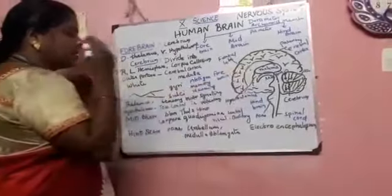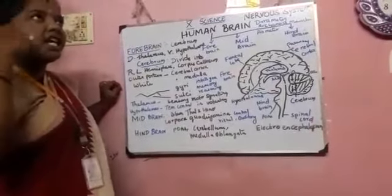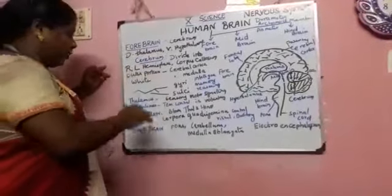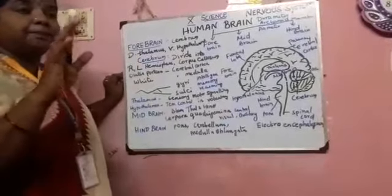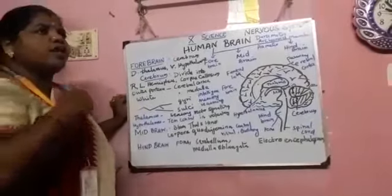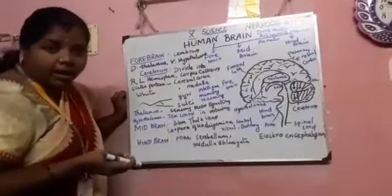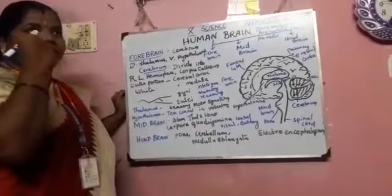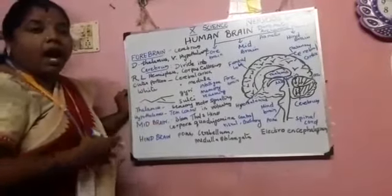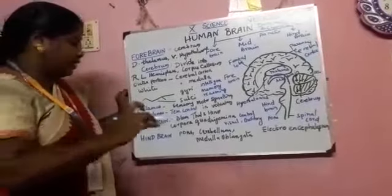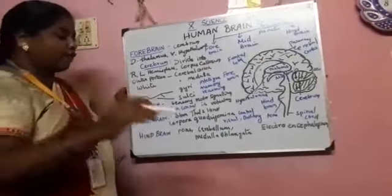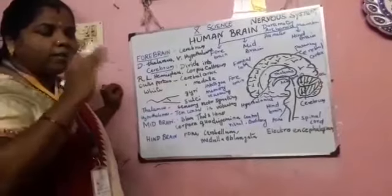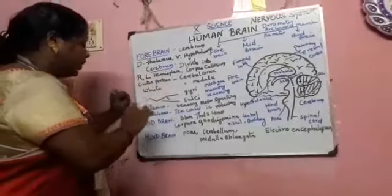The thalamus is for sensory motor signaling — receiving sensory signals and sending motor signals. The hypothalamus controls the involuntary muscles. Involuntary means without any external input, it happens by itself — like sweating, sleeping, hunger, anger, etc. So the hypothalamus is the control center for involuntary muscles, and it is also able to control the temperature of our body. So the hypothalamus plays a vital role.